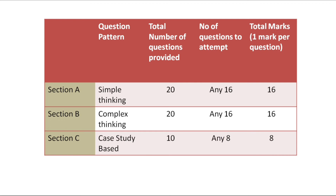To summarize: Section A is 16 marks, Section B is 16 marks, and Section C is 8 marks — totalling 40 marks for the MCQ examination, plus 10 marks for internal assessment. Internal assessment components include assignments, portfolios, periodic tests, and subject enrichment activities, divided into parts to make a total of 10 marks.